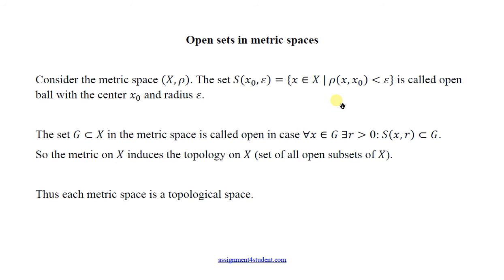For example, in three-dimensional spaces with Euclidean metric, you can imagine that this will be really like a ball. So, the set G in metric space is called open if for any element from G we can find an open ball which is contained inside G.